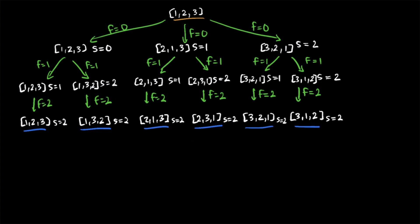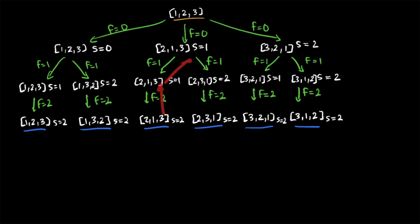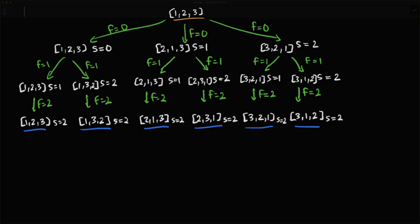This imitates a depth-first search. We start at the root, go down the leftmost branch, print the permutation, go back up, proceed to the next branch, go down and print, then backtrack. We continue this pattern: print, back up, back up, go the other way, print, back up, and so on. Eventually we reach the rightmost branches, printing three two one and three one two, then backtrack all the way up.